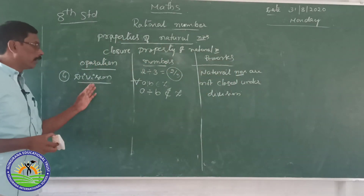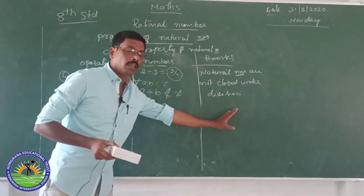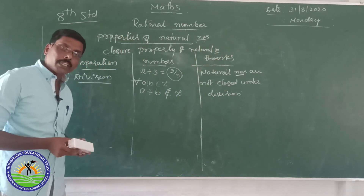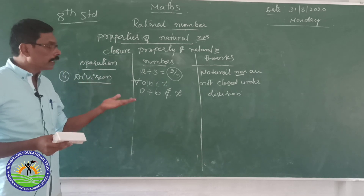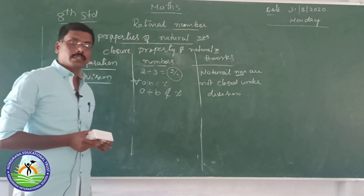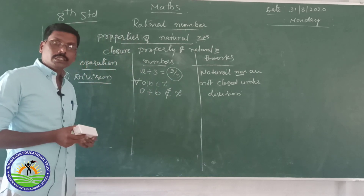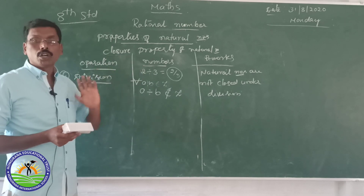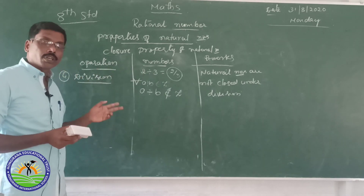Therefore, division is not closed for natural numbers. But multiplication is closed for natural numbers. Subtraction is not closed, and addition is closed.